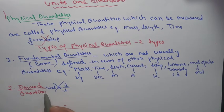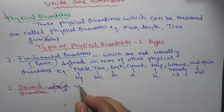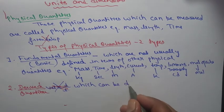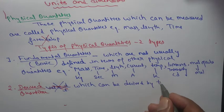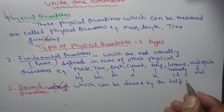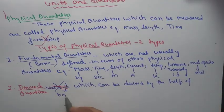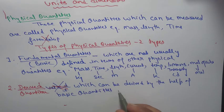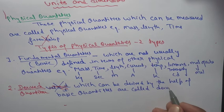Derived quantities are those which can be derived by the help of basic quantities. Quantities derived from basic quantities are called derived quantities.